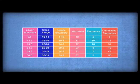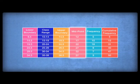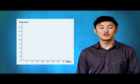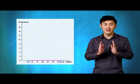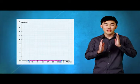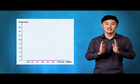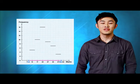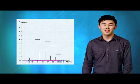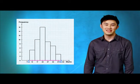This new table includes class range, upper and lower boundaries, midpoint, frequency, and cumulative frequency. So now let's draw a histogram. The bottom of each vertical bar is drawn from the lower boundary to the upper boundary, and the height of each bar is marked by the frequency of each class, forming a complete histogram.